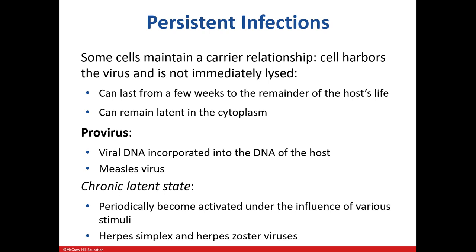In some instances, the host cell almost befriends the virus and is not immediately damaged. This relationship can last a few weeks to years. A provirus is one that incorporates its DNA into the DNA of a host cell. The measles virus is an example — this virus can hide out in brain cells for years, which can lead to damage and loss of function of the nervous system. It's a rare complication, but it can be deadly. In a chronic latent state, the virus can be reactivated by things like stress or hormones. The herpes simplex virus is known for this, as well as herpes zoster, which causes chicken pox and shingles.